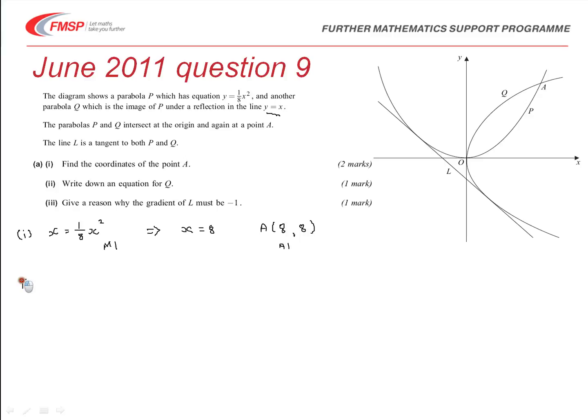Part two then asks us to write down the equation of Q. So, if Q is a reflection of P, then if we take the equation for P, and x is replaced by y, and y is replaced by x, it's quite simple to write down the equation as being x equals one-eighth of y squared. It's that simple. It's purely using the fact that if we're reflecting in y equals x, the x and the y variables are just swapped over. And that will give you your one mark.